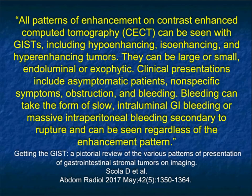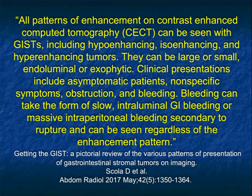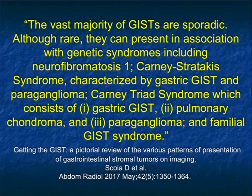All patterns of enhancement on contrast CT can be seen with GIST tumors — hypoenhancing, isoenhancing, and hyperenhancing. In my experience, smaller tumors tend to be more hypervascular, while larger tumors tend to be less vascular. Most cases present with abdominal pain; obstruction and GI bleeding can also occur. Bleeding can take the form of a slow intraluminal GI bleed or even massive intraperitoneal bleeding secondary to tumor rupture, though rupture is something I've only seen a handful of times.